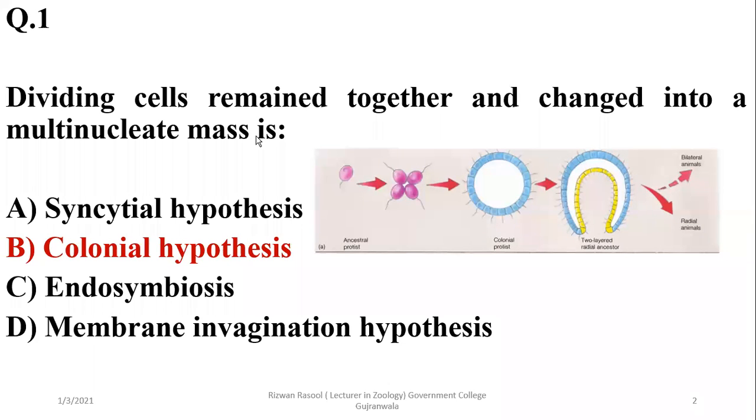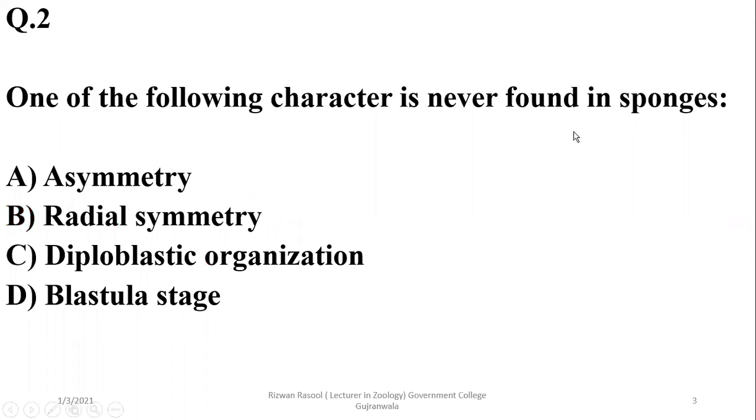Endosymbiosis and membrane invagination hypotheses describe the evolution of eukaryotes from prokaryotes. Question two: One of the following characters is never found in sponges. Sponges are asymmetrical or sometimes radially symmetrical, and they have a blastula stage.